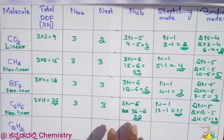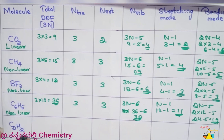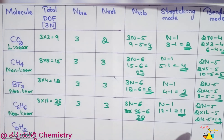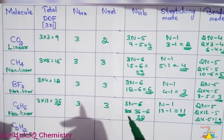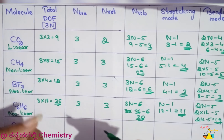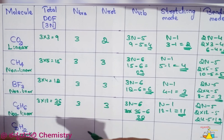Now you try: C₂H₂ (acetylene) — is it linear or non-linear? Solve it and post your answer in the comment section. Thank you so much. Please subscribe to our channel to get more videos. Thank you.